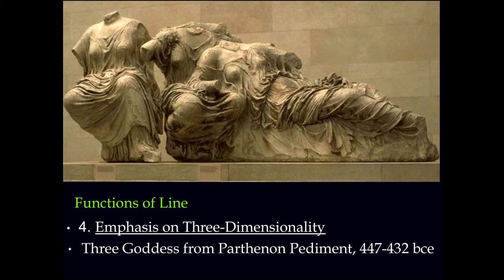Lines are also used in three-dimensional work to emphasize the dimensionality. All of this drapery is accenting the fact that these forms are round. If they were just smooth, they could get lost in the sun. These were made out of pure white marble — they didn't have all these shadows on them — so on a cloudy day they'd be less contrasty. They made sure to really go all out with the drapery.